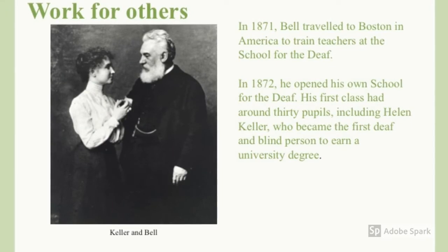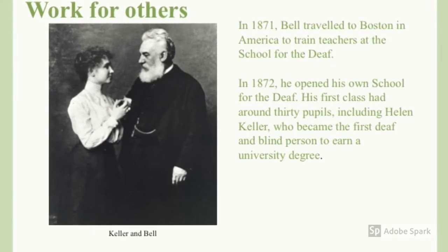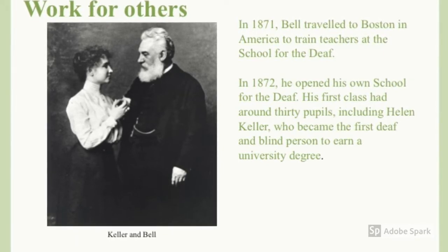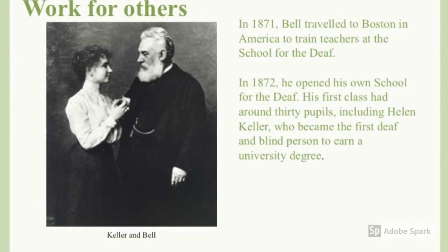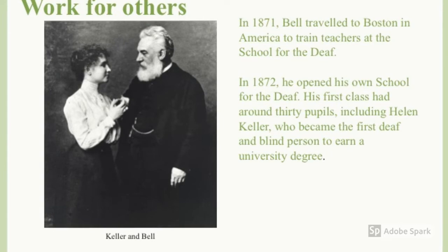In 1871, Bell travelled to Boston in America to train teachers at the school for the deaf. In 1872, he opened his own school for the deaf. His first class had around 30 pupils, including Helen Keller, who became the first deaf and blind person to earn a university degree.